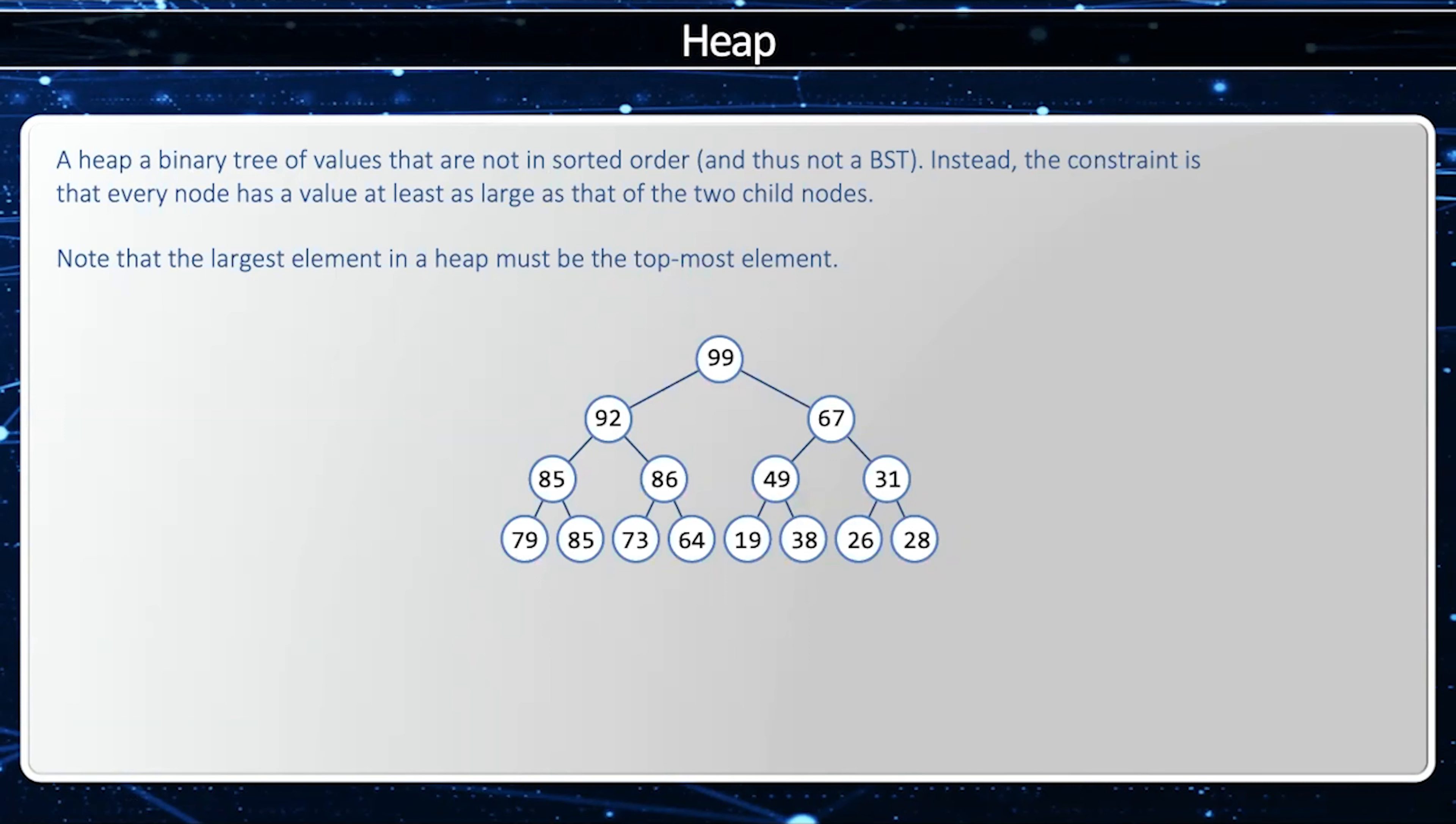First, we'll take a look at node 99 and 92. Since 99 is greater than 92, the heap constraint is honored. Next, we'll look at the node between 99 and 67. Since 99 is greater than or equal to 67, the heap constraint is honored.